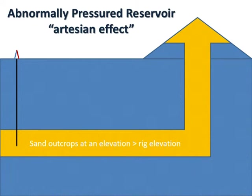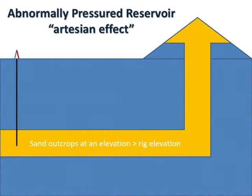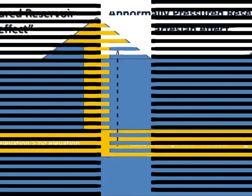An abnormally pressured reservoir might be abnormally pressured because of the Artesian effect. In this example, we see a sandstone that outcrops at an elevation greater than the rig elevation. Therefore, the density of the fluid in the reservoir might not change; however, the height of the column of fluid — the depth — would change, as the outcrop is much higher than the drilling rig, such as when it outcrops in the mountains.